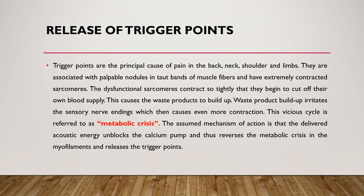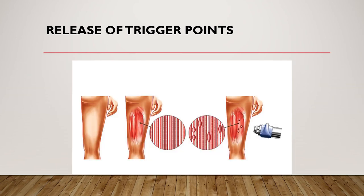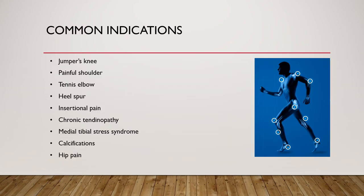Trigger points are knot-like structures in the taut band of a muscle. Shockwave can crush them, producing a metabolic crisis in the trigger points and then reversing trigger point formation. A schematic shows how shockwave application onto a trigger point can cause its release. Common indications include: jumper's knee, painful shoulder, tennis elbow, heel spur, insertional pain, chronic tendinopathy, medial tibial stress syndrome, calcification, and hip pain. The range of treatable conditions is wide and not limited to this list.